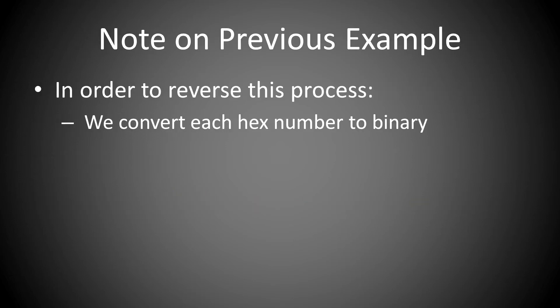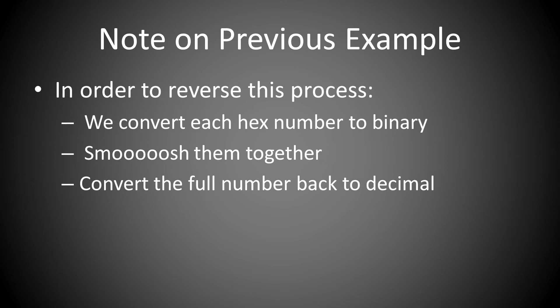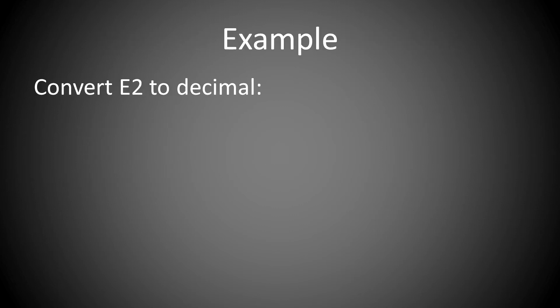In order to reverse this process, first we convert each hex number to binary. Then we smoosh them all together, and then we convert the full number back to decimal. So let's do an example of that. Convert E2 to decimal. E is 1110, and 2 is 0010 in binary.